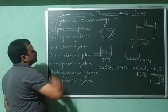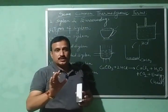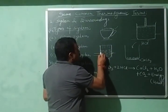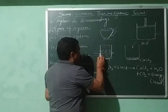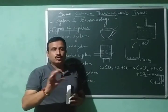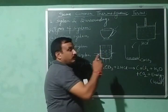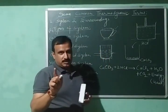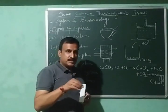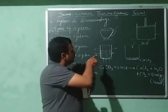Next is the closed system. A system is said to be a closed system if it exchanges only energy with the surroundings, not matter. For example, if hot water is taken in a closed metallic container with conducting walls — conducting walls are important for heat transfer — then the vapour cannot escape, meaning matter is not exchanged. But heat can go out through the conducting walls. So in this case only energy is exchanged, not matter. This is an example of a closed system.